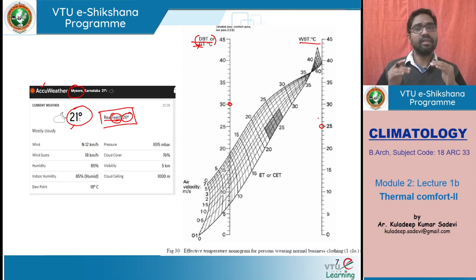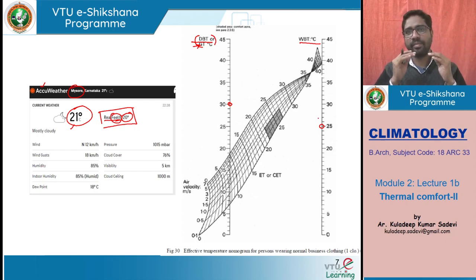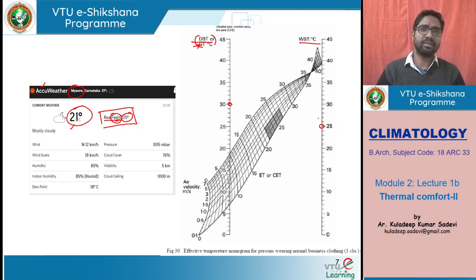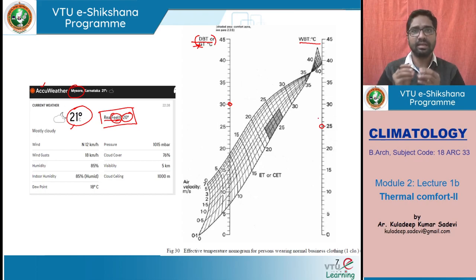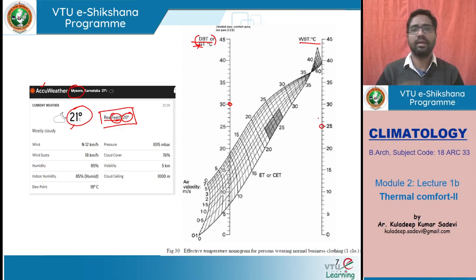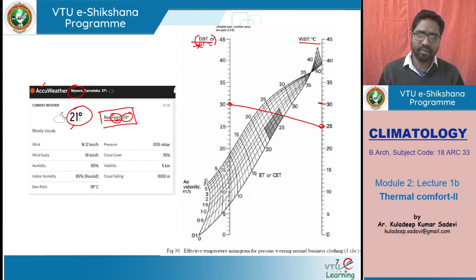We should understand that wet bulb temperature is always equal to or less than dry bulb temperature — wet bulb temperature cannot be more than dry bulb temperature. Wet bulb has a wet cloth which keeps evaporating moisture, and if the surrounding air is comparably drier, that makes the thermometer reading cooler than the actual temperature. So if the dry bulb temperature is 30 degrees centigrade and wet bulb temperature is 25 degrees centigrade, if we draw a line between dry bulb and wet bulb on the chart, and there are different velocity lines — 0.1, 0.5, 1 meter per second — at 1 meter per second air velocity, the line meets at around 26 degrees centigrade effective temperature.